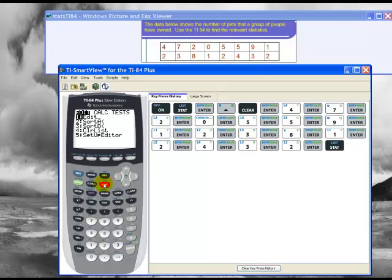So I hit STAT. Then use the right arrow to get to calculate. And I want one-variable statistics. So I click enter. And then 2nd L1 because I want to find statistics of the L1 list. And hit enter. And there's my statistics.